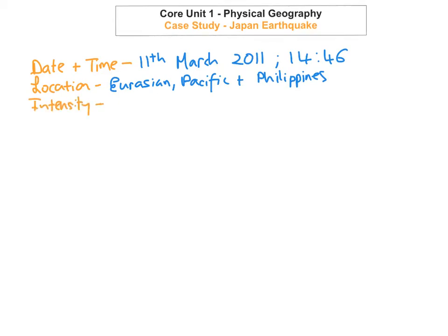So the intensity of the earthquake — it reached 9 on the Richter scale. It actually reached 7.2 on the Richter scale before the actual main earthquake on the 11th of March, so it was 7.2 on the 9th of March. And it also suffered lots of aftershocks, with some of the aftershocks being as big as 6 on the Richter scale.